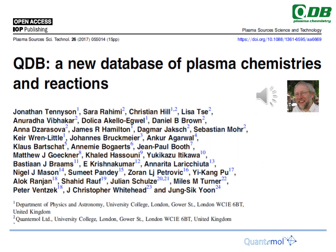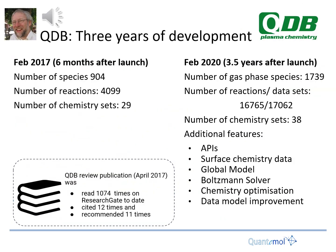Three years ago, almost exactly, we published a paper, and quite a few of you will recognize your names listed as co-authors — that was the original scientific launch of the database, though we'd actually been distributing data about three or four months before. Measuring progress three years up to launch: at that point we had 900 species — we've now just about doubled that. We had just over 4,000 reactions — we now have a four-fold increase in that.